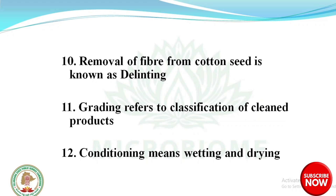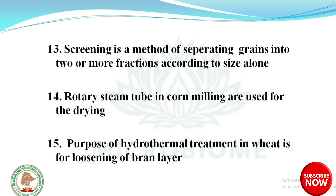Conditioning means wetting and drying. Screening is a method of separating grains into two or more fractions according to size alone. Rotary steam tubes in corn milling are used for drying. Purpose of hydrothermal treatment in wheat is used for loosening of the bran layer.